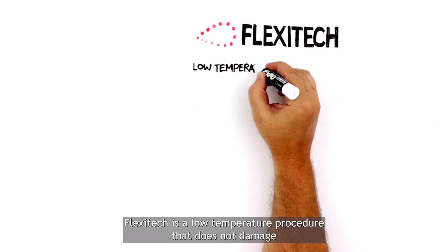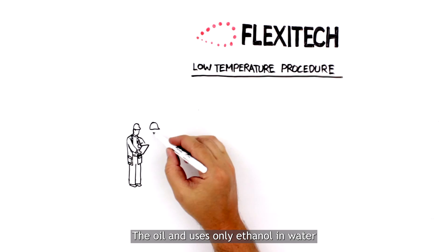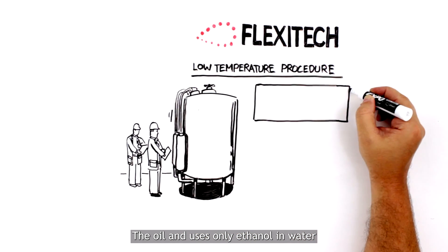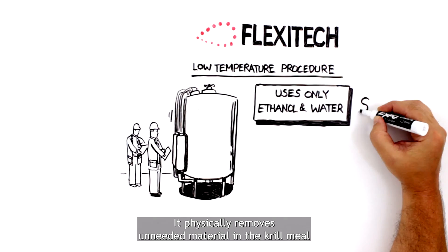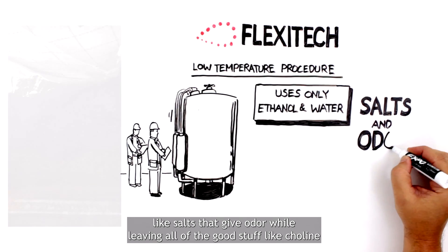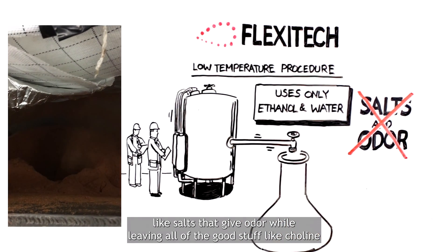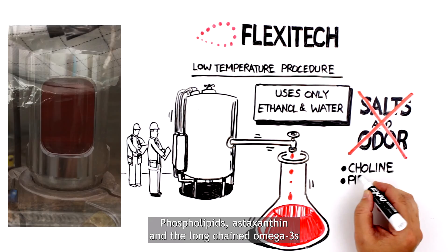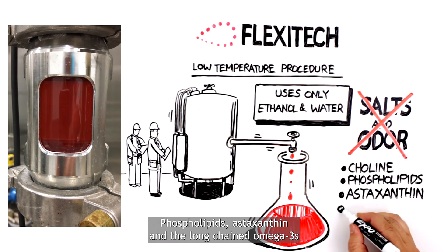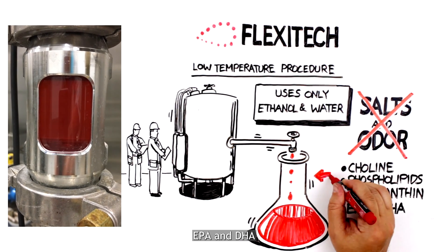Flexitec is a low-temperature procedure that does not damage the oil and uses only ethanol and water. It physically removes unneeded material in the Krill Meal like salts that give odor while leaving all of the good stuff like choline, phospholipids, astaxanthin, and the long-chain Omega-3s EPA and DHA.